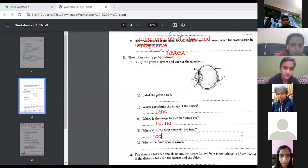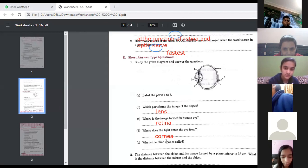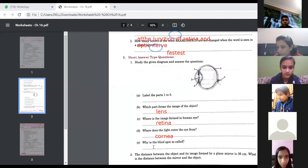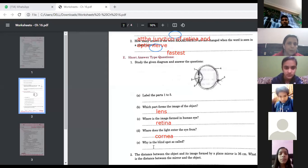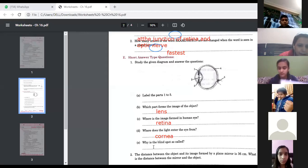So rest of the part you have done, should I erase? Have you done the above part children? Yes ma'am. So which part forms an image we have already written, convex lens forms the image. After that where is the image formed? Image is formed on retina. Where does the eye light enter the eye from? Cornea. Yes, it's cornea.